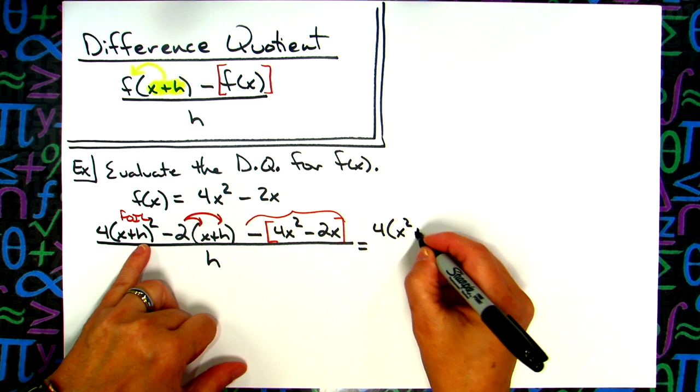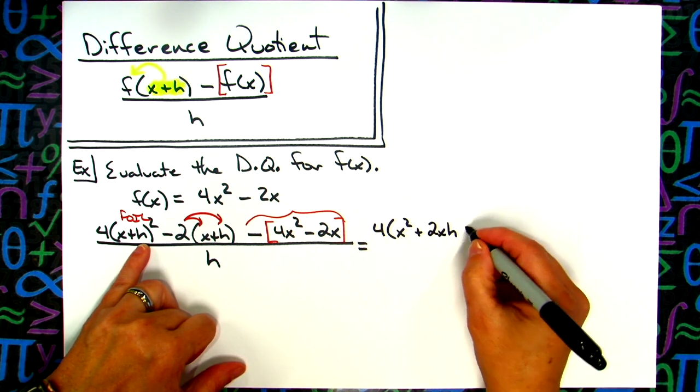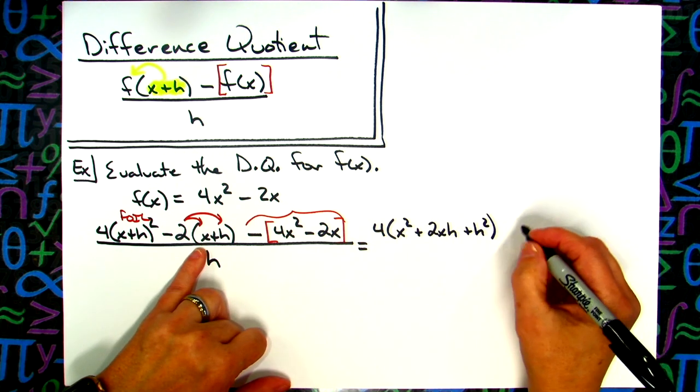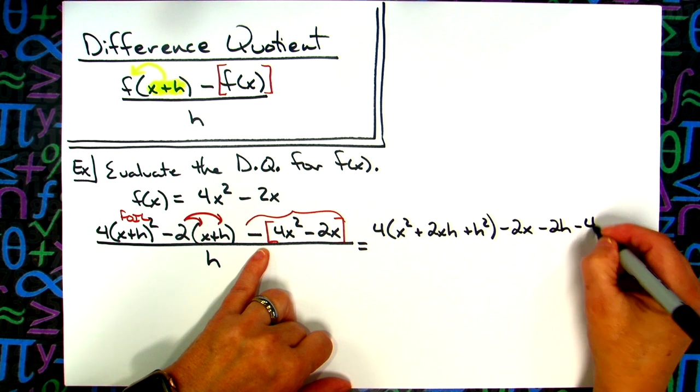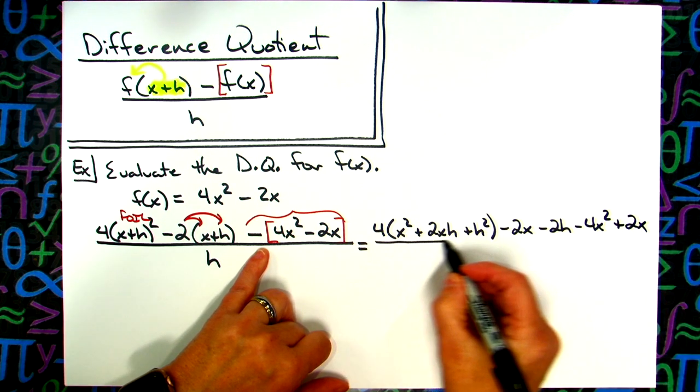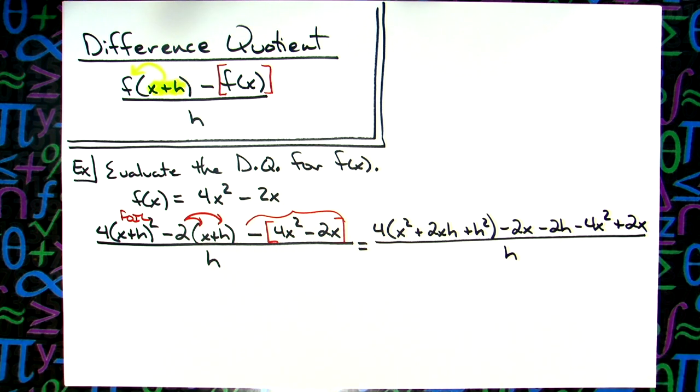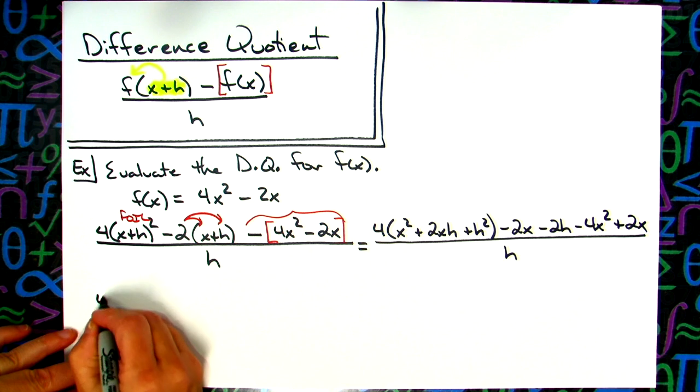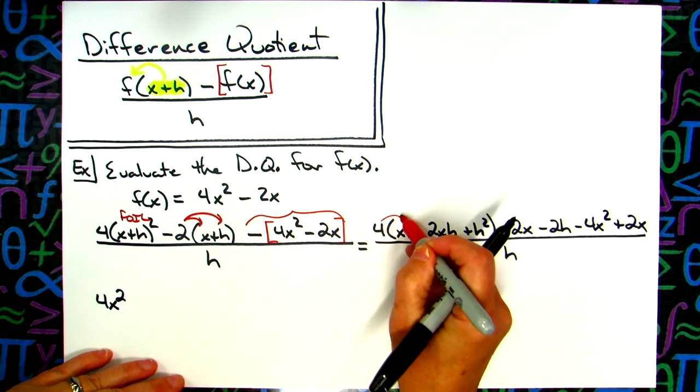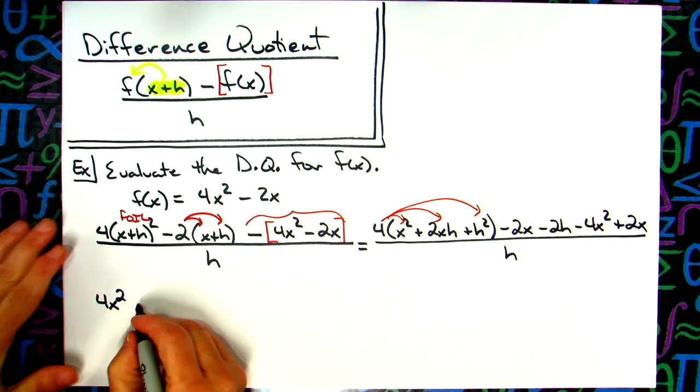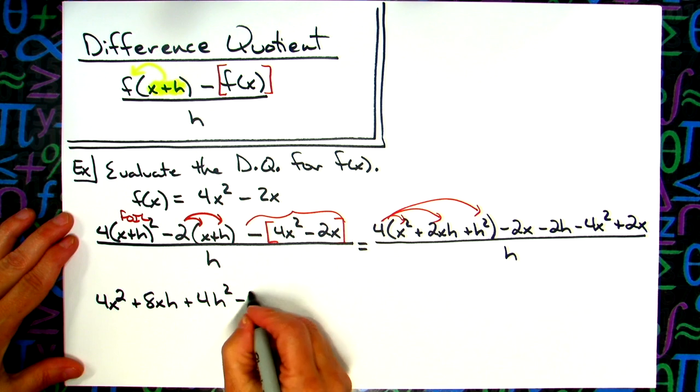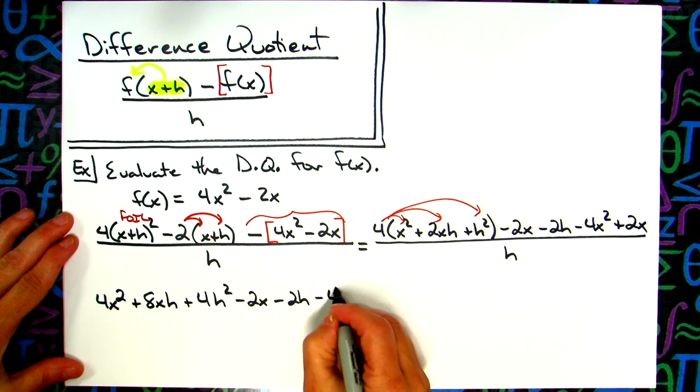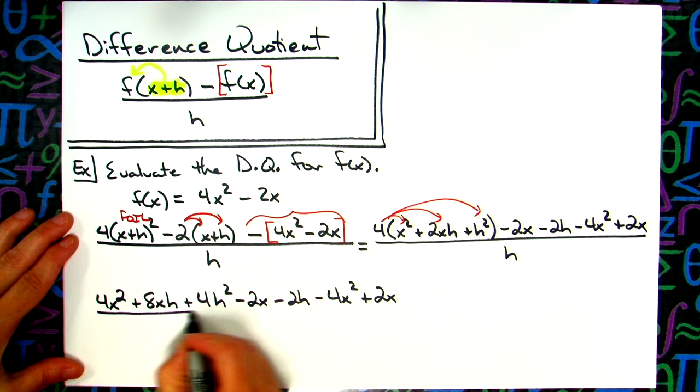From here down to the rest of the problem, all this is is algebra. You're going to foil right here and then distribute the 4. You're going to distribute that 2. You're going to go through and change your signs on that last part. I'm going to keep the 4 out in front when I foil. So x squared, plus 2xh, then you got to square the last one, h squared. I'm going to distribute the 2, so minus 2x minus 2h. And then just go through and switch the signs. Minus 4x squared plus 2x all over h.